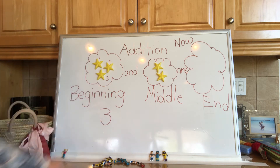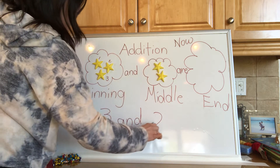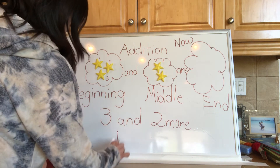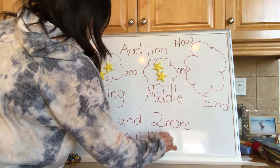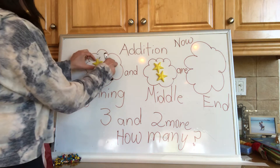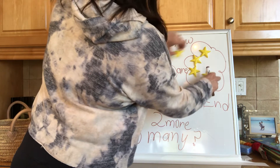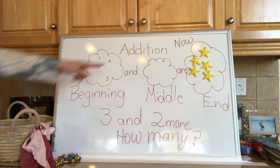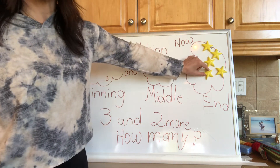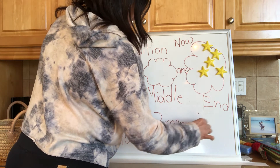I had three at the beginning, and I saw two more. How many do I see in total? I could move all of these over for the end of my story. There were three at the beginning, I moved the two, and at the end of my story, let's count: one, two, three, four, five. So three and two more is five.